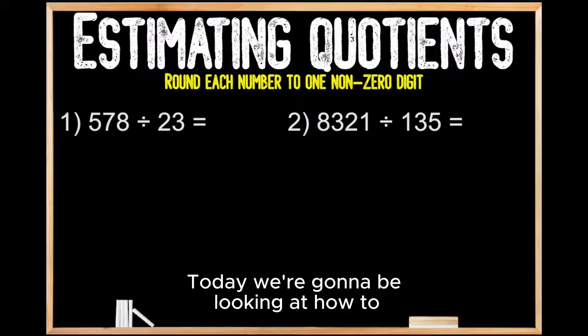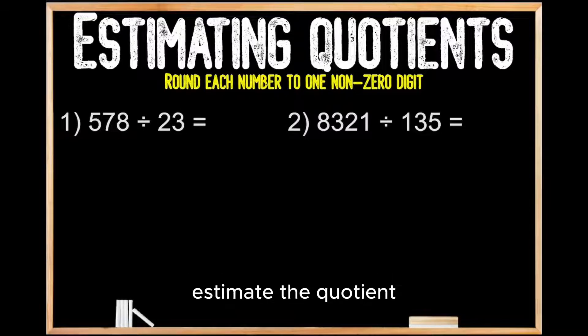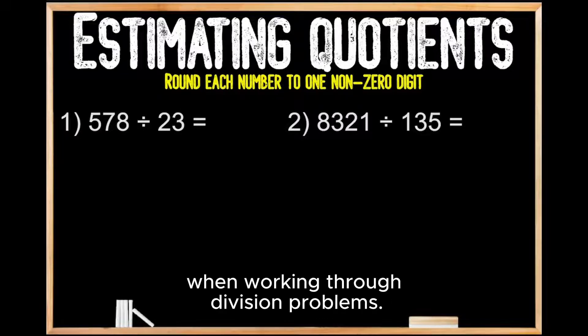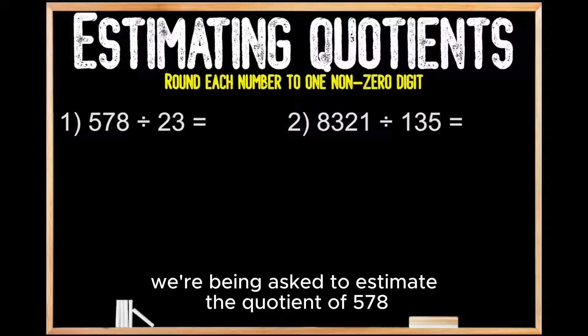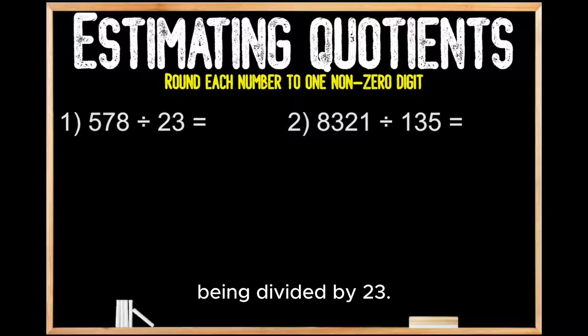Today we're going to be looking at how to estimate the quotient, or the answer, when working through division problems. For question number one, we're being asked to estimate the quotient of 578 being divided by 23.